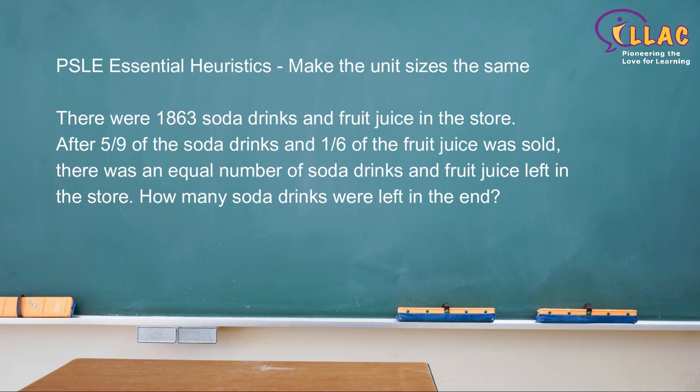There were 1,863 soda drinks and fruit juice in the store. After 5 over 9 of the soda drinks and 1 sixth of the fruit juice was sold, there was an equal number of soda drinks and fruit juice left in the store. How many soda drinks were there in the end?